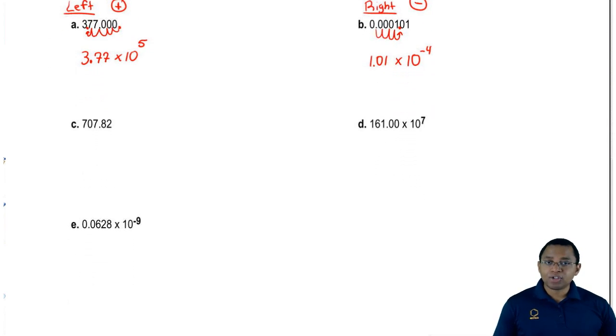For C, we have 707.82. Again, we want the coefficient to be between 1 and 10. We want the decimal to fall between this 7 and this 0. We're going to move it over 1, 2 spaces.